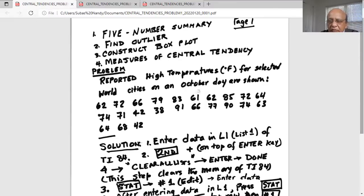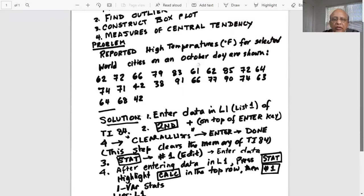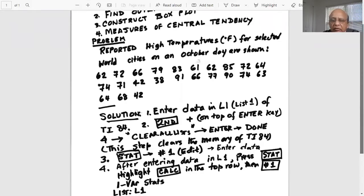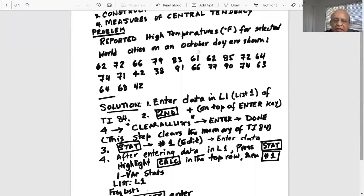So what is the first step? We will be using the calculator TI-84. The first thing we have to do in the calculator is enter data in L1, list one of TI-84. In order to do that, we will press the second button, and then plus, which is on top of enter. And then number four. And then we get clear all list on our calculator screen, then hit enter. It says done. This step clears the memory of TI-84.